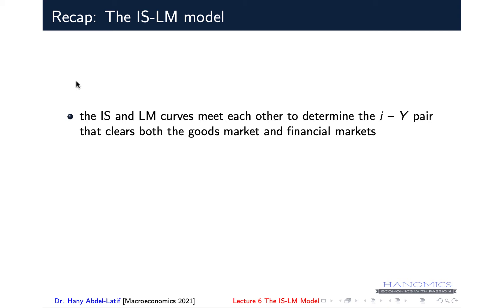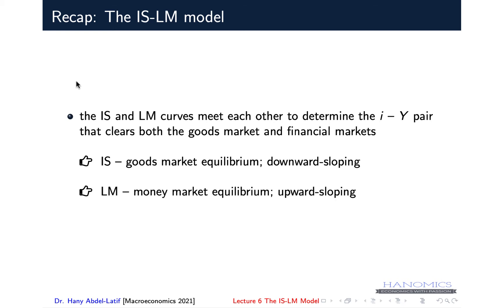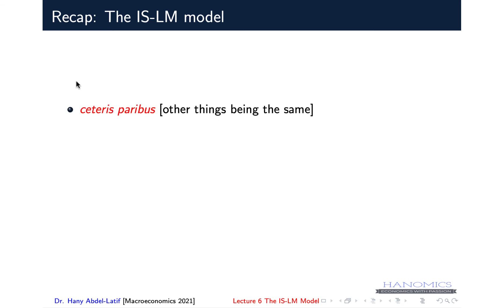As you may remember, the IS and LM curves meet each other to determine the combination of interest rate and output that clears both markets — the goods market and financial markets — simultaneously. We know the IS refers to equilibrium in the goods market and is a downward sloping curve. The LM refers to equilibrium in the money market and traditionally is drawn as an upward sloping curve, though we also explained when we could draw the LM as a horizontal line.